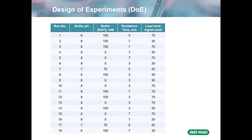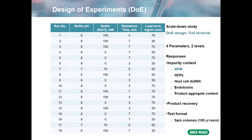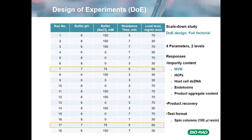Here's a table of the DOE performed using spin columns — a full factorial four-parameter with two levels. The four parameters studied were buffer pH, salt concentration, residence time, and load level onto the column. The responses were impurity content — which included MVM, HCPs, DNA, endotoxins, and product aggregate content — as well as product recovery. The test format was in spin columns using 100 microliters of resin.